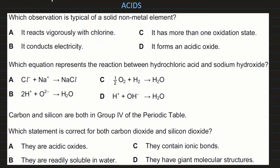The next question asks which observation is typical of a solid non-metal element. It does not react vigorously with chlorine — no solid non-metal at O-level reacts vigorously with chlorine. Solid non-metals don't conduct electricity; they have no free ions. More than one oxidation state is shown by transition elements. However, it forms an acidic oxide — yes, that is true and typical for a solid non-metal.